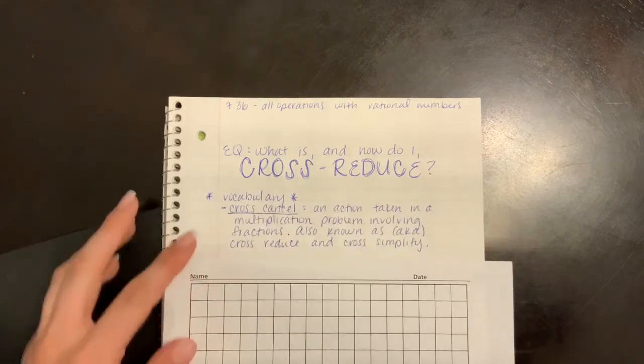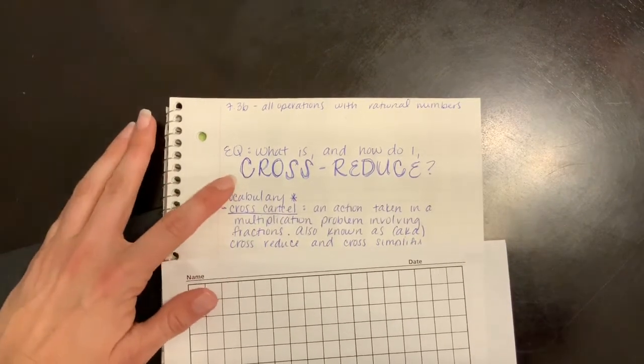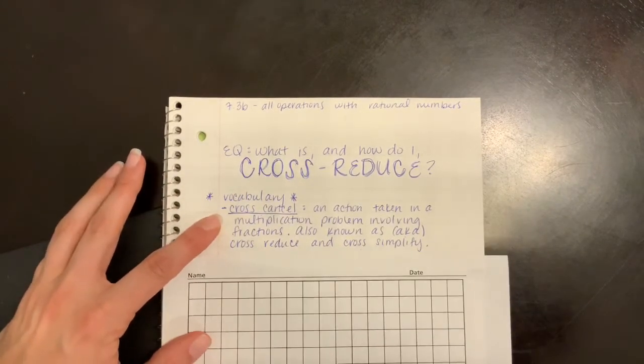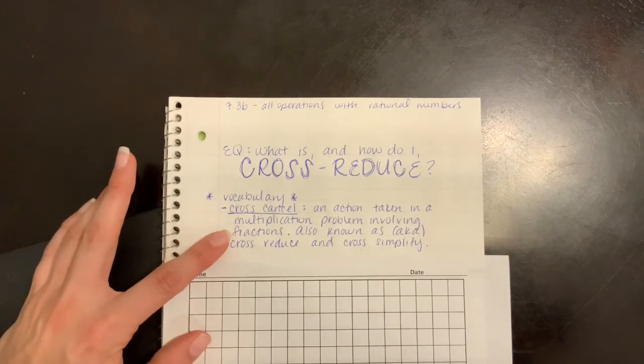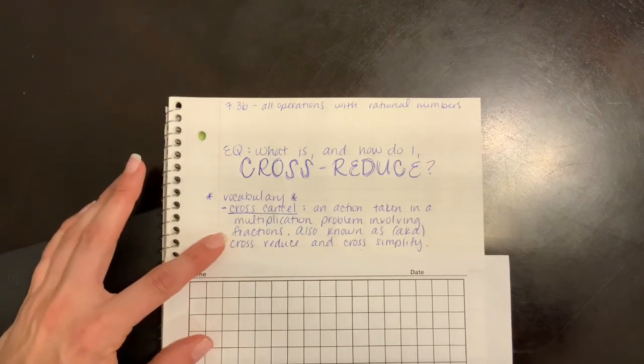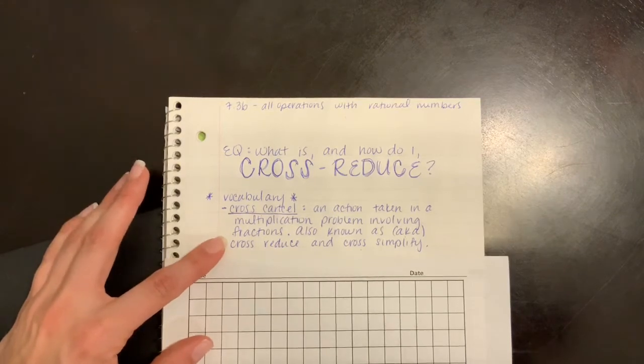We have a vocabulary term, which is essentially cross-reducing. Cross-canceling is an action taken in a multiplication problem involving fractions, also known as cross-reduce and cross-simplify.